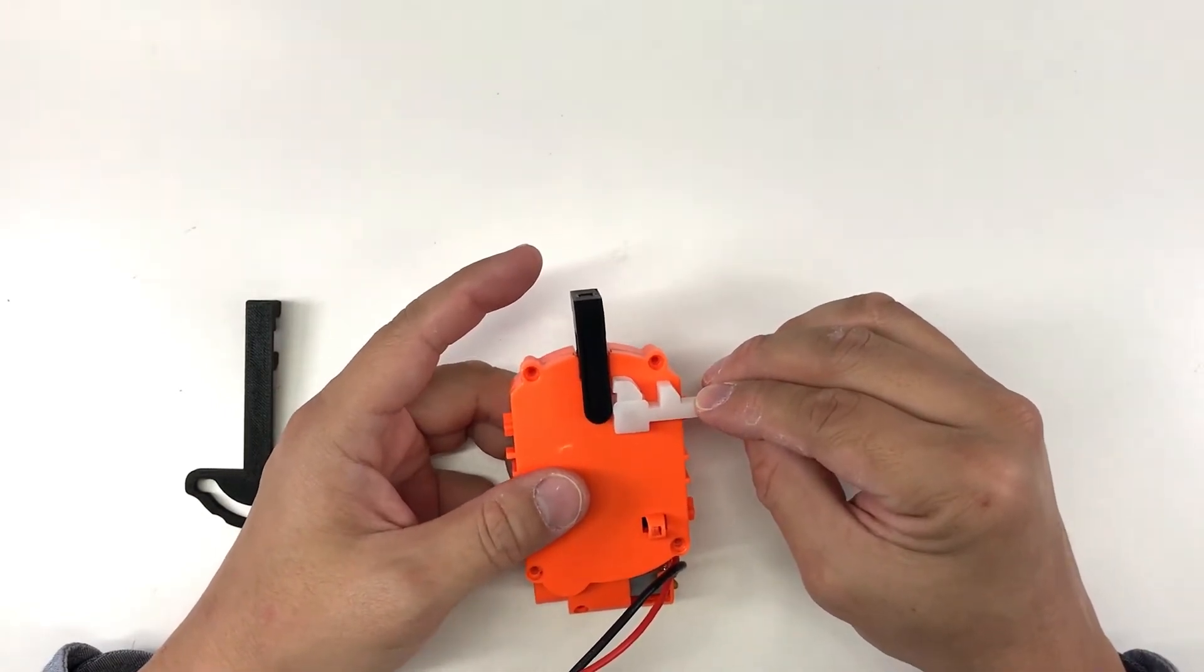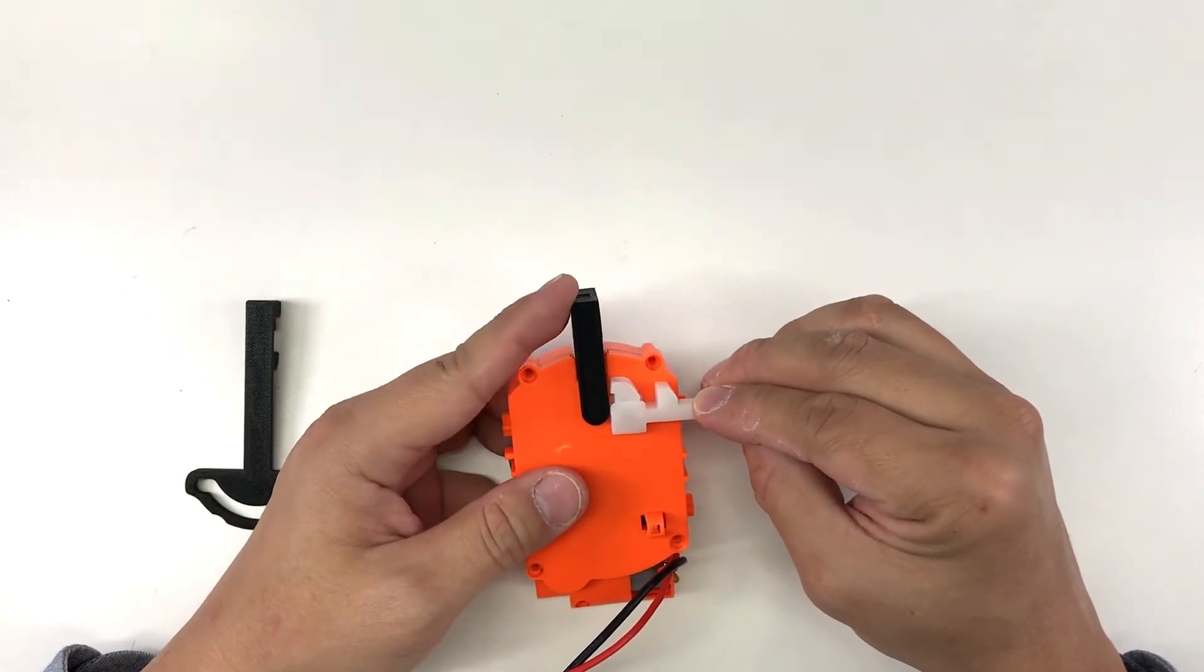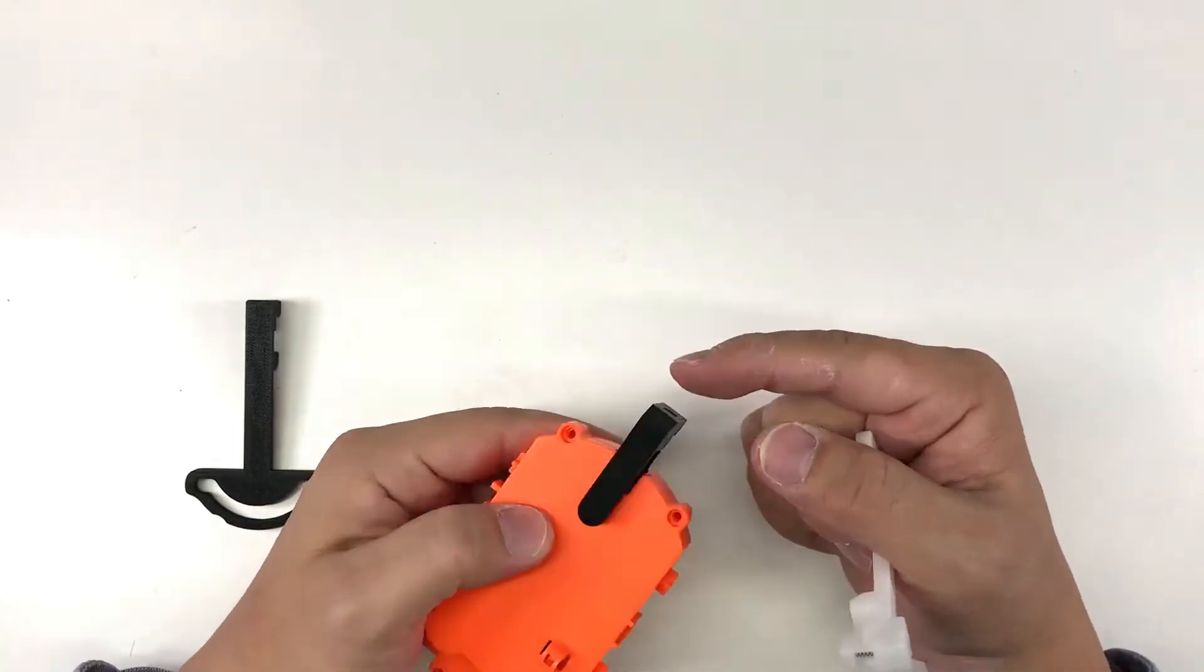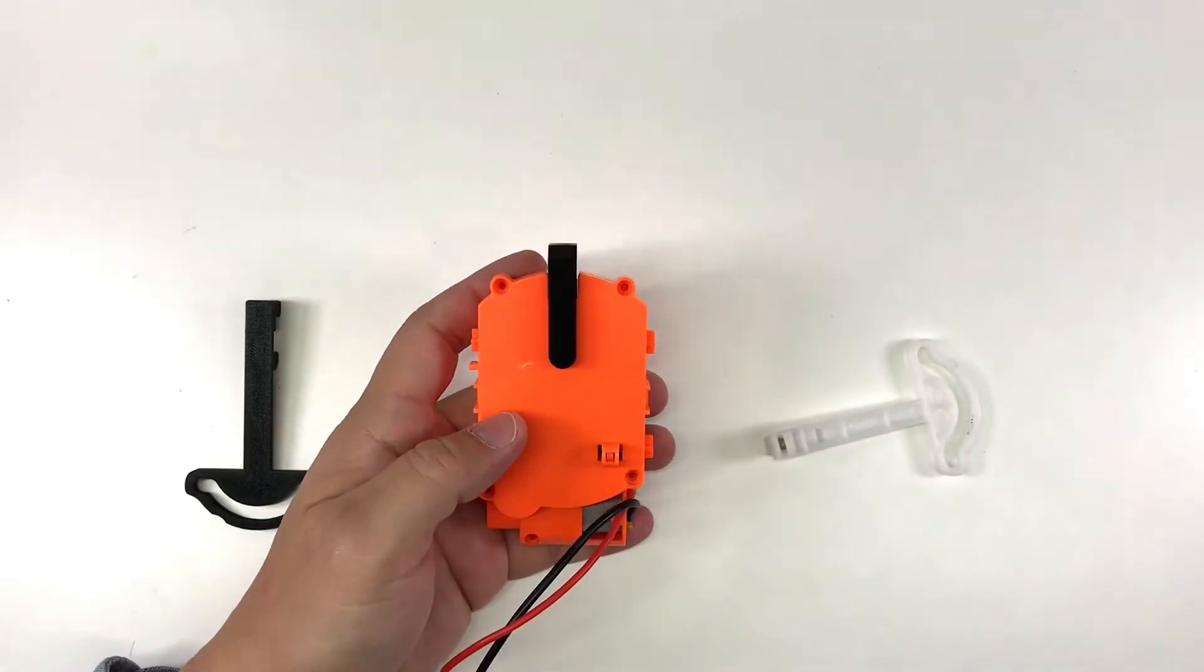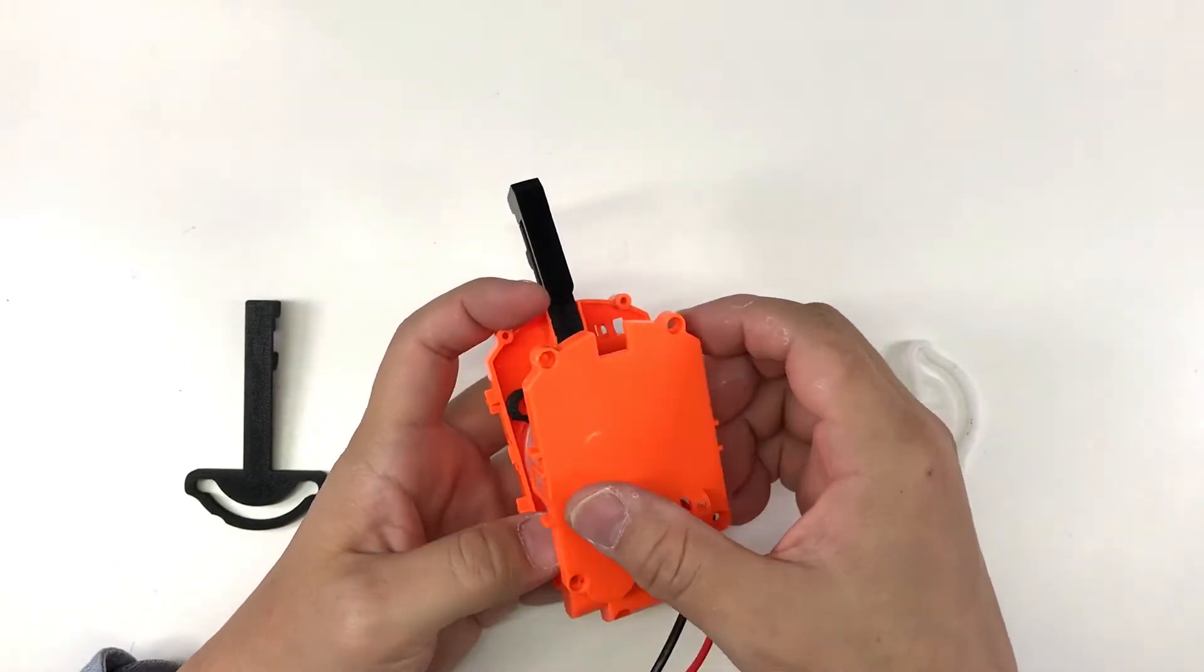If you look at my select-fire Rapid Strike mod previously, you will know that I mount a microswitch here to detect the number of rounds fired. So this is basically what I require, hence I modeled a pusher. So I thought, hey, since I'm modeling a pusher, I can just provide another one.